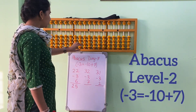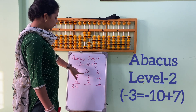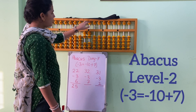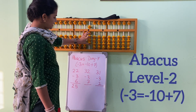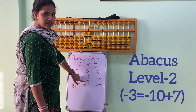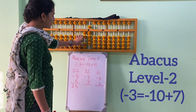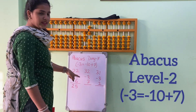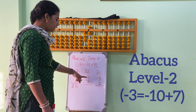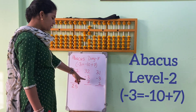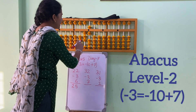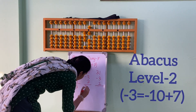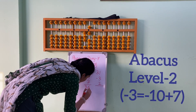Let's see the next sum. 32. 3, 2, 32. Minus 3. So what is the formula of minus 3? Minus 10 plus 7. 5, 6, 7. Now add 7. So what is the formula of plus 7? That is plus 10 minus 3. 1, 2, 3. So in this we have used both the formulas — minus 3 and plus 7. The answer is 36. In 10's place we have 3 bits and in 1's place we have 6. That is 36.